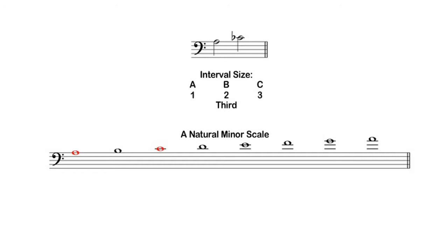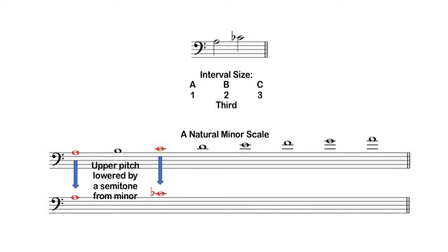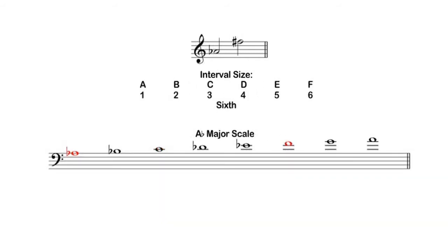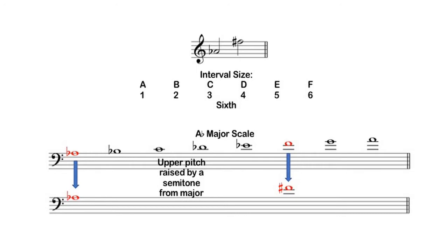Diminished intervals would be a half step narrower than what would appear in the natural minor scale. For example, A to C flat: C natural appears in the minor scale built on A, but this is a half step narrower because the higher pitch has been brought down by a half step, so this would be a diminished third. In the example A flat to F sharp, in the key of A flat major we would expect an F natural. Since this is a half step wider than what would occur in the major scale, the interval is an augmented sixth.